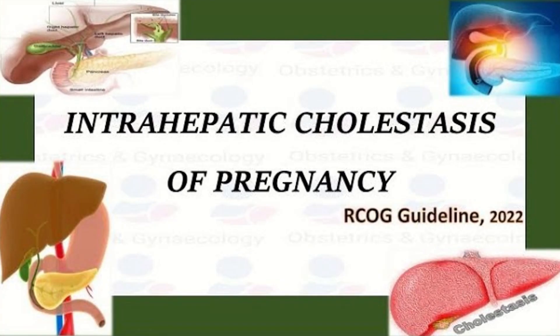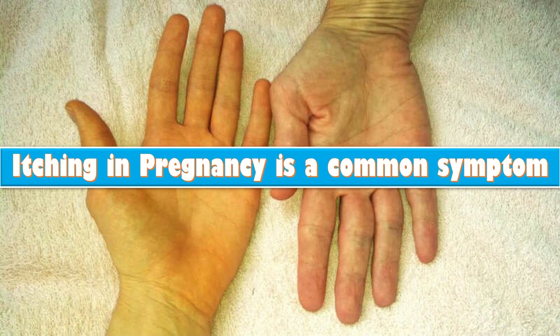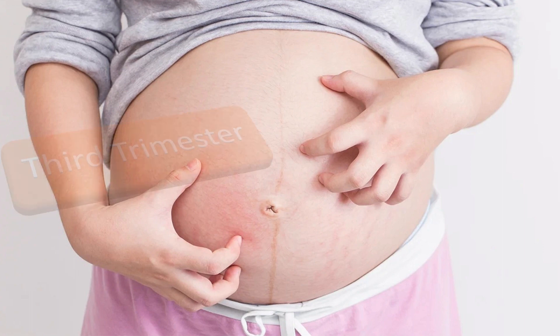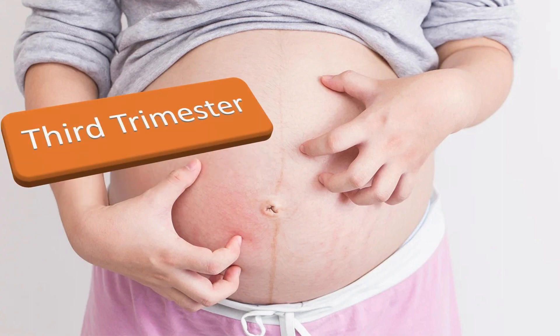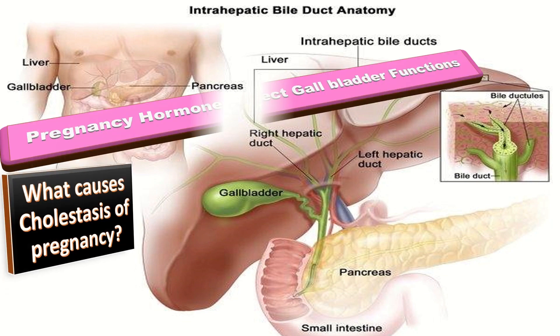Jaundice in pregnancy is a medical condition in which cholestasis occurs during pregnancy, also called intrahepatic cholestasis of pregnancy (ICP). It typically presents with troublesome itching and can lead to complications for both mother and fetus. ICP occurs most commonly in the third trimester but can begin at any time during pregnancy. The pregnancy hormones affect gallbladder function, slowing or stopping the flow of bile, causing a buildup of bile acids in the liver which can spill into the bloodstream.